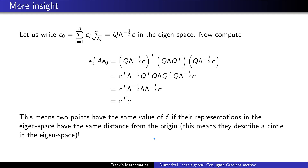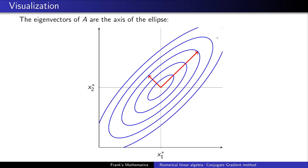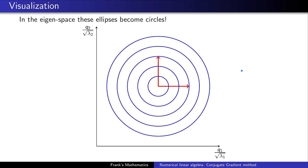Let's visualize this. You can see the ellipses here, which contain points with the same function value of F. I draw here the eigenvectors of A, which are the main axes of the ellipse. If you transform these ellipses into the eigenspace, they become circles. This is super nice — keep this in mind, this is what the transformation into the eigenspace achieves, and we will make heavy use of it.